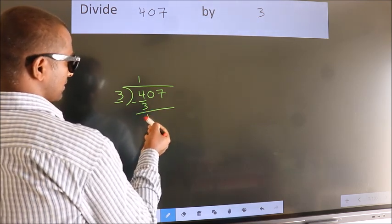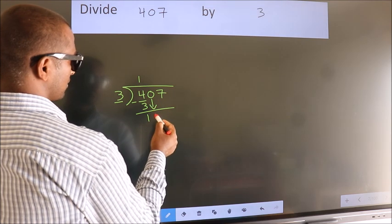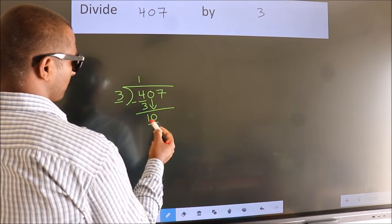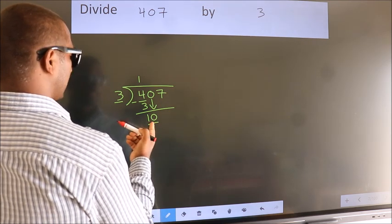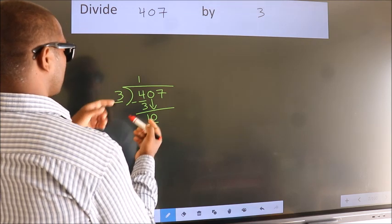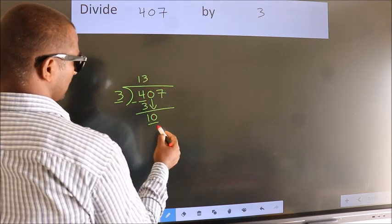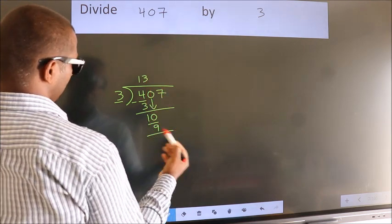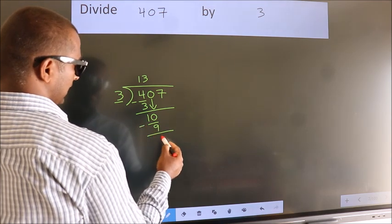After this, bring down the beside number. So, 0 down. So, 10. A number close to 10 in 3 table is 3 3s 9. Now, we subtract. We get 1.